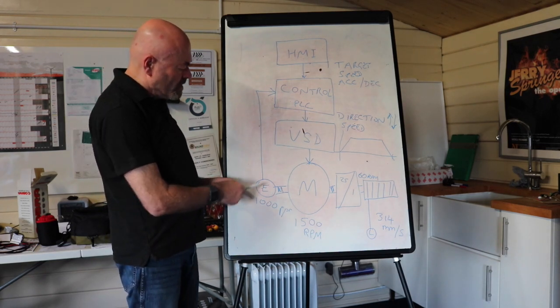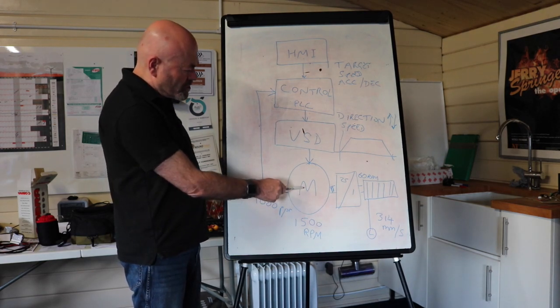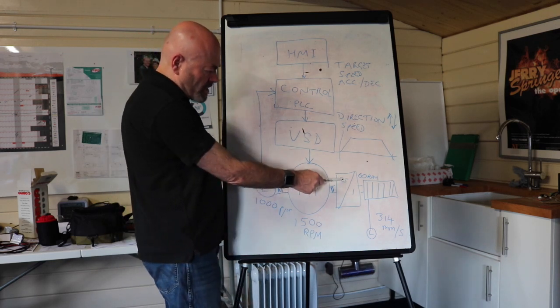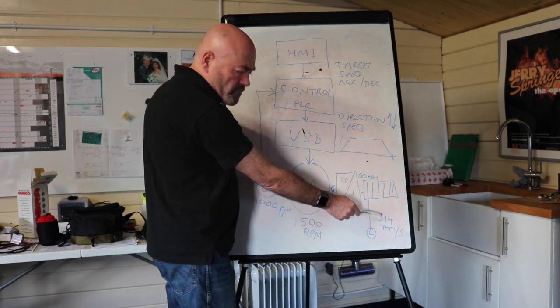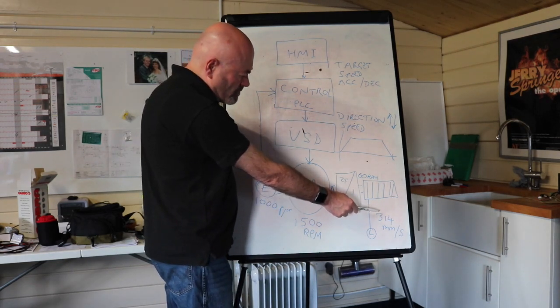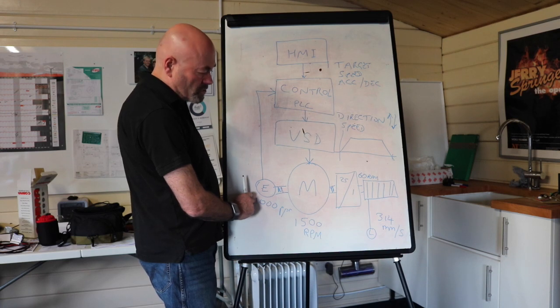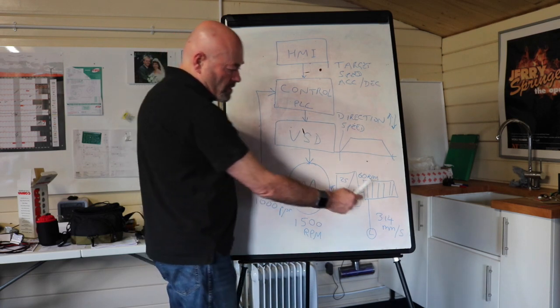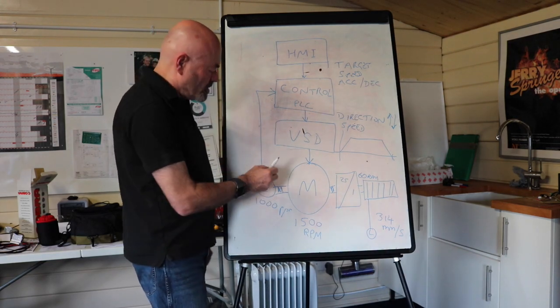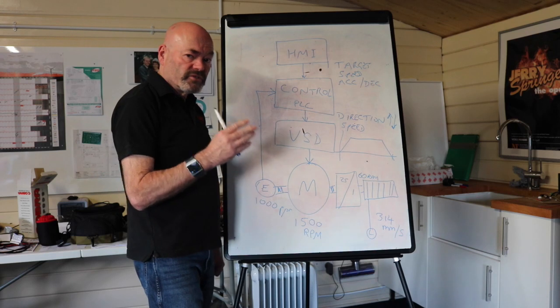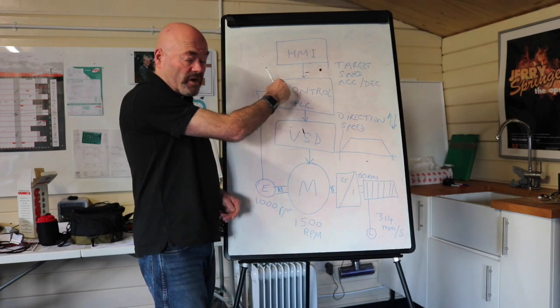Also, we can scale it. If we know there's a thousand pulses coming out here for one revolution, and we know we're turning down 25 to one, and we know the diameter of this drum, we know that at full speed we're going to do 25,000 pulses, and we know this is going to do 314 millimetres. So 314 divided by 25,000 gives us a scaling factor so that we know not only how fast it's going, but we also know how far it's travelling.